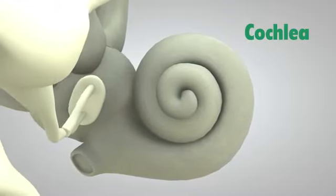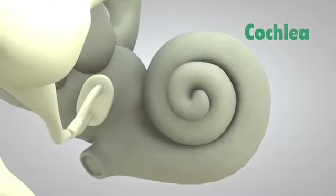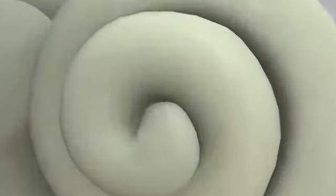The cochlea is shaped like a snail and is the size of a garden pea. It is filled with fluid, and the sound vibrations make this fluid ripple, which creates waves.